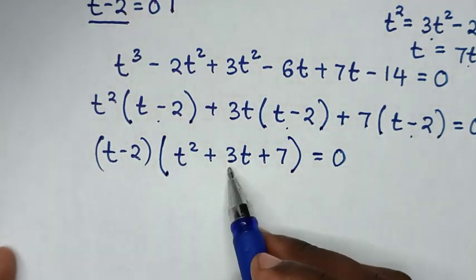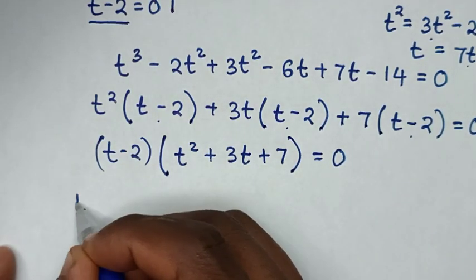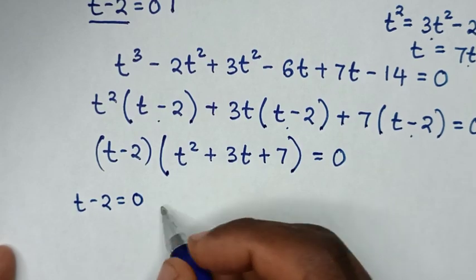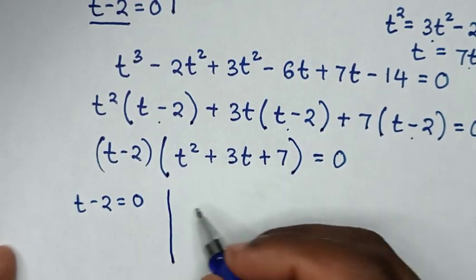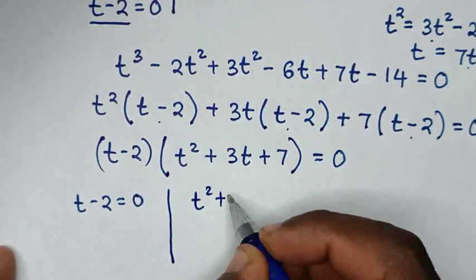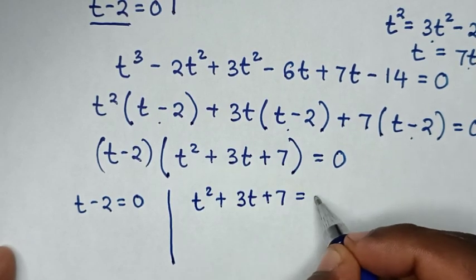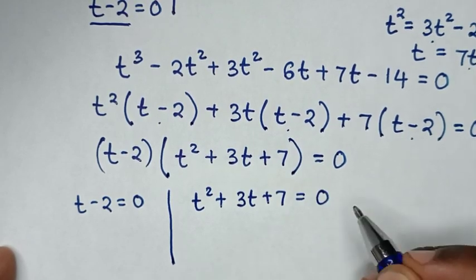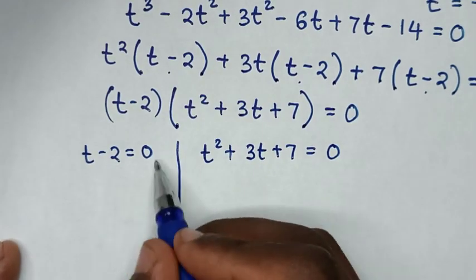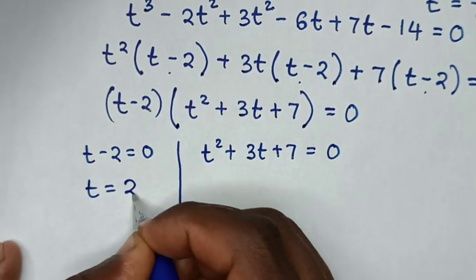Then from here we have two solutions. The first solution is t minus 2 equal to 0, and the second solution is t squared plus 3t plus 7 equal to 0. From the first solution we take negative 2 to the right side, giving t equal to 2.